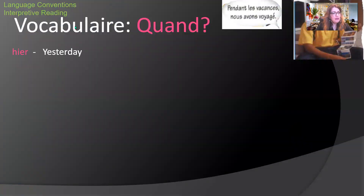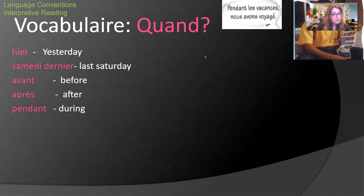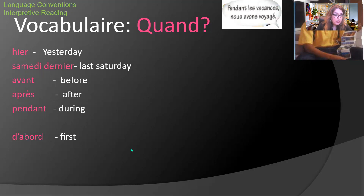Some expressions indicate time or answer the question 'quand' — when. Hier means yesterday; samedi dernier means last Saturday; avant, après, pendant (during), d'abord (first), ensuite (then), finalement (finally), et enfin (at last). Not all imply the past tense, but they all indicate when an action was done.